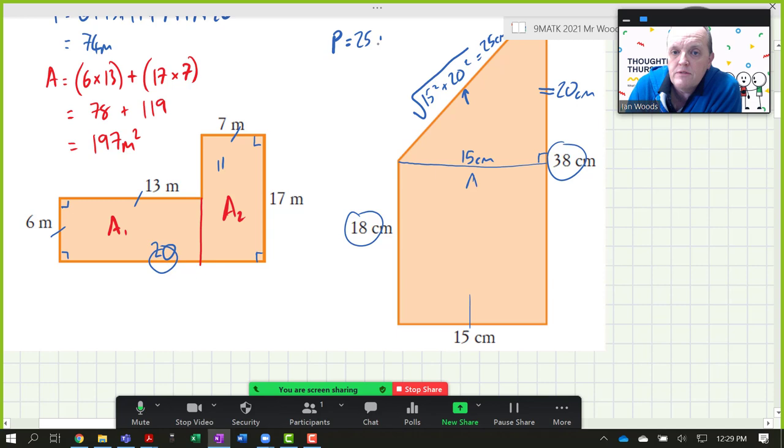So our perimeter is going to be 25 plus 38 plus 15 plus 18, which will give us, that's 40 and that's 56, so that's going to be 96 centimetres.